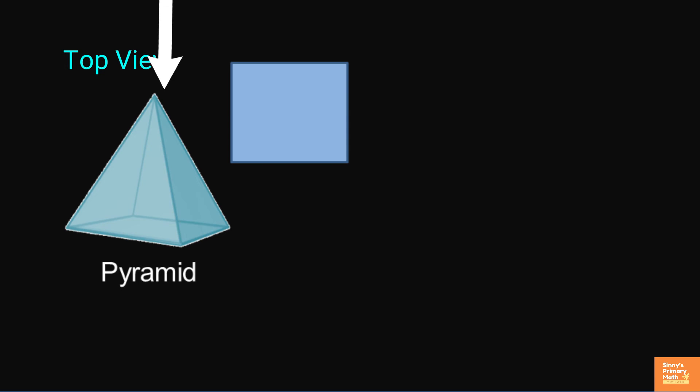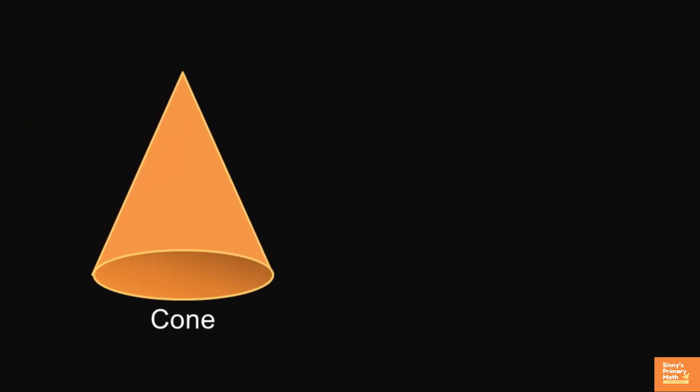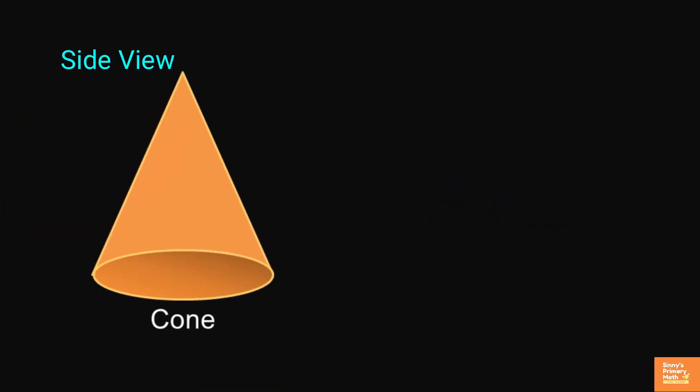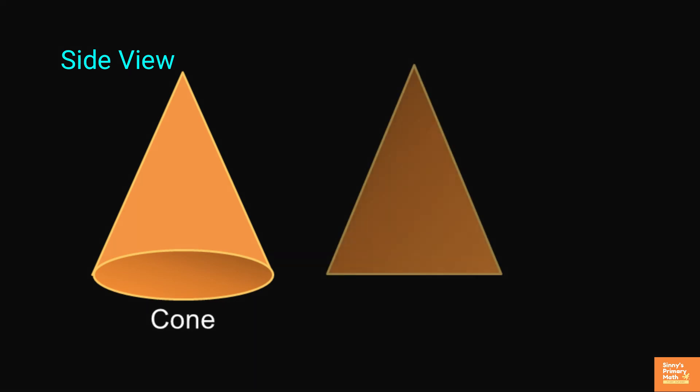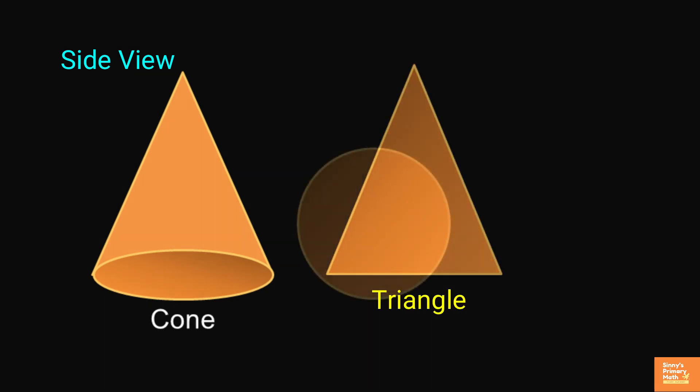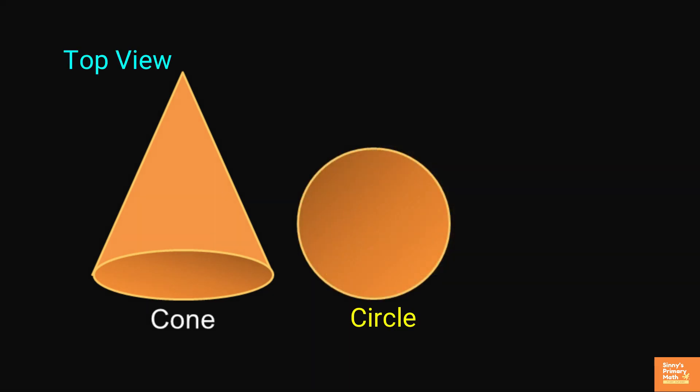From the top, it will look like a square. Corn: side view for corn, it will look like a triangle. From the top, it will look like a circle.